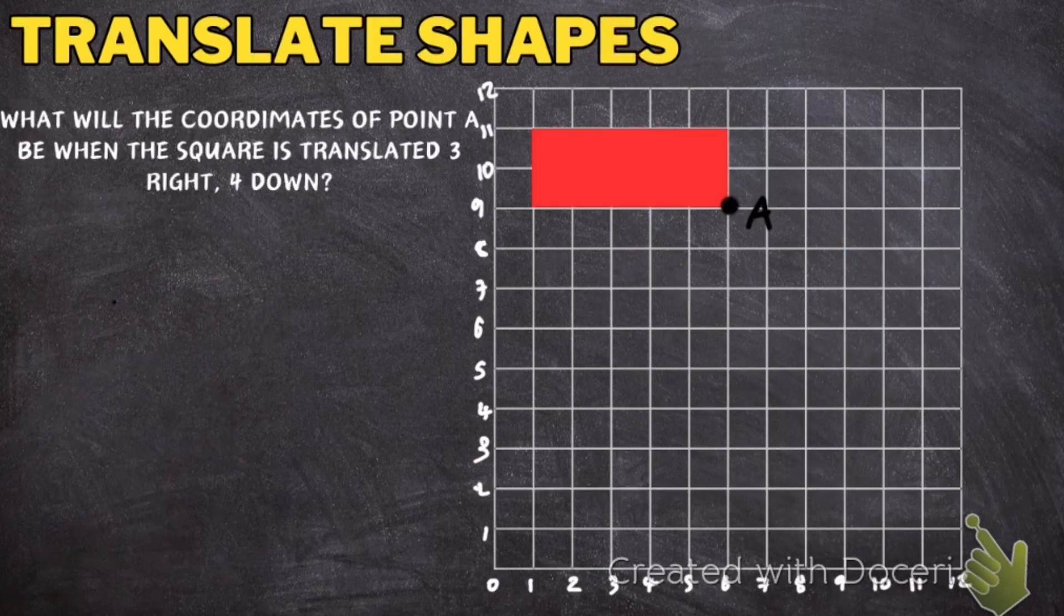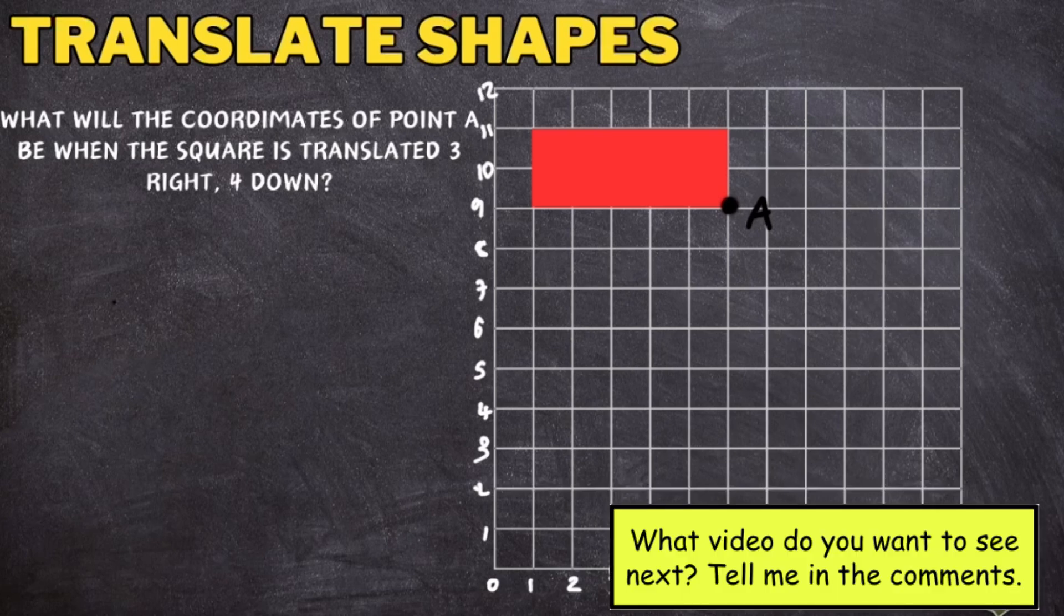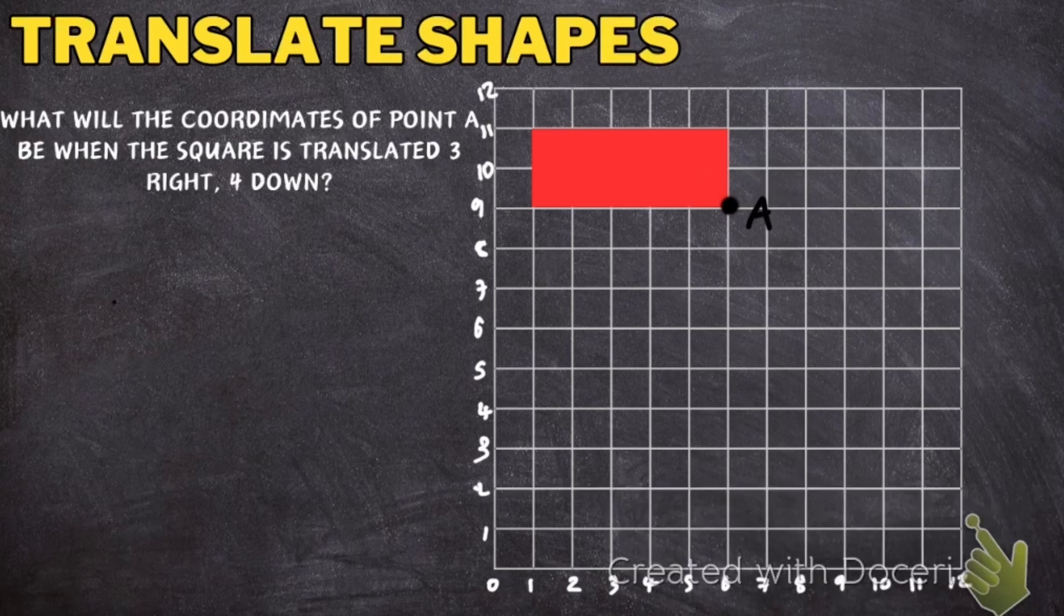So in this last question it says, what will the coordinates of point A be when the square is translated 3 right and then 4 down? So this is point A here. So I've got to figure out what the new coordinates are going to be. So I'm going to start by moving it 3 right. So I'm going to pick point A. I'm going to stay with that, 3 right.